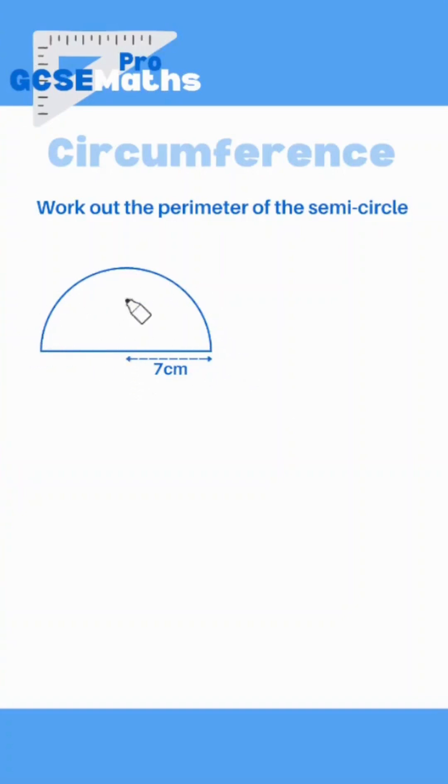So for a semicircle we have two sides. We've got the curve and we've got this long bit here which is obviously the diameter of the circle. Starting with the curve, how do we work out the length of this arc here?